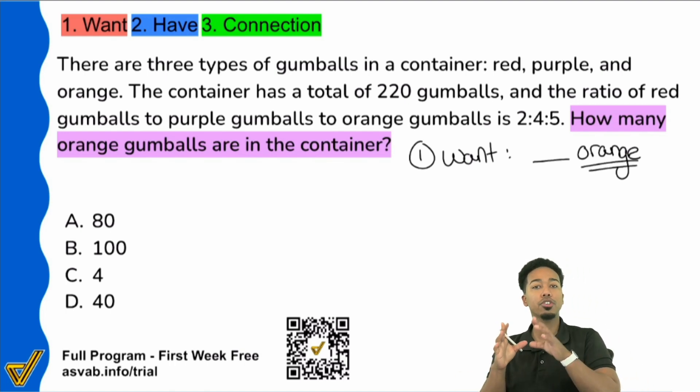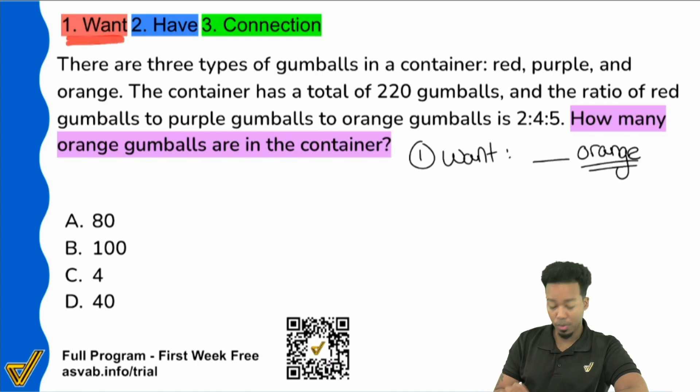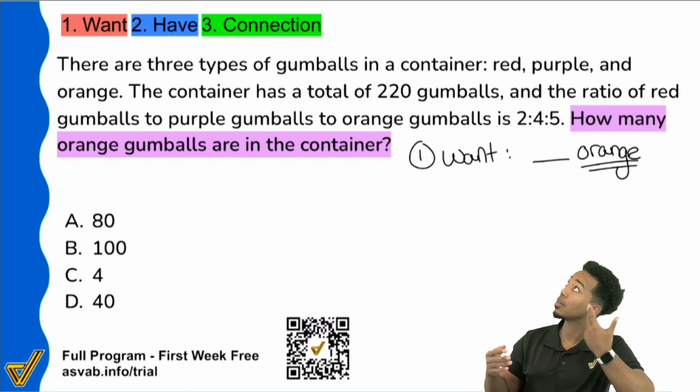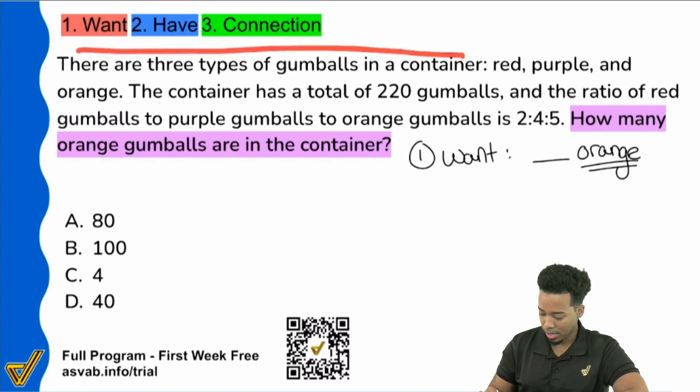Again, always turn your attention first to what you're looking for so that way you're not worried about the information or getting confused by it. So next up, what do we do next? Well, once we have what we want, then the next thing is, what do we have? What information is given to us to help us get to the number of orange gumballs? Here we go. So if I go ahead and start with the first sentence, it says there are three types of gumballs in a container: red, purple, and orange.